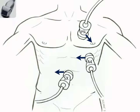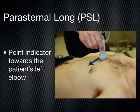Recall that in the parasternal long axis, we have the indicator pointing towards the patient's left hip or left elbow, and the probe is right against the sternum. For apical 4 chamber and apical 5 chamber, we've got the indicator pointing to the patient's right, and this is all with the dot on the left-hand side of the screen, which is in the standard radiology configuration.